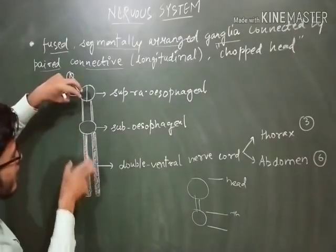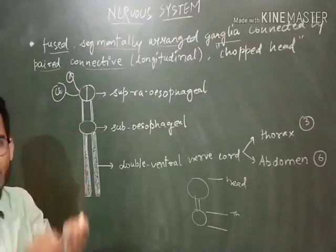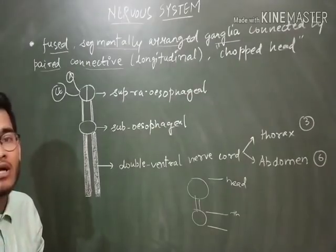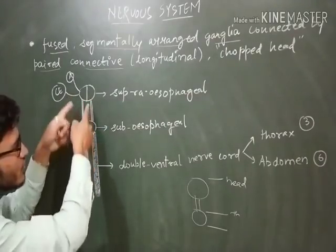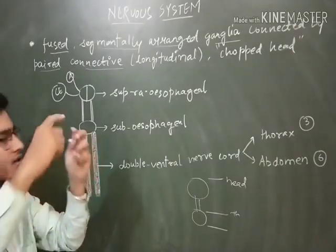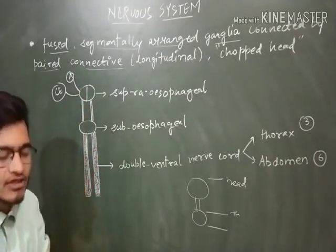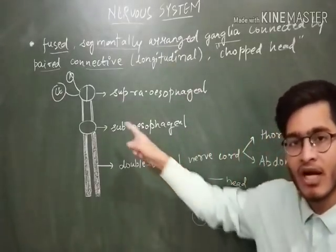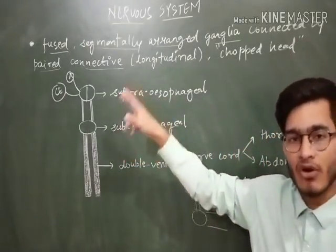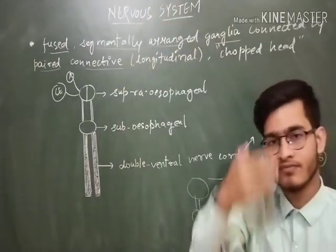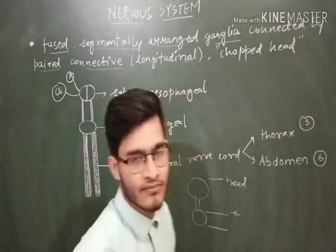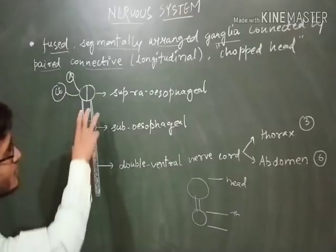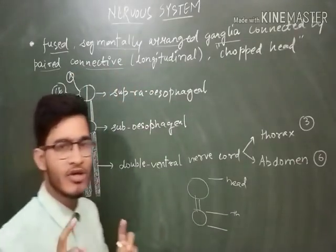There will be some longitudinal strands which will be connecting those ganglions, and those longitudinal strands will be called as the connectives. And there are two connectives I have shown over here, so that the two strands use as the one ganglion so that it will be connected to the lower ganglions. So these strands are in the shape like strip-like structures, paired connectives which are longitudinal in nature, and they will go through the ventral side of the body.